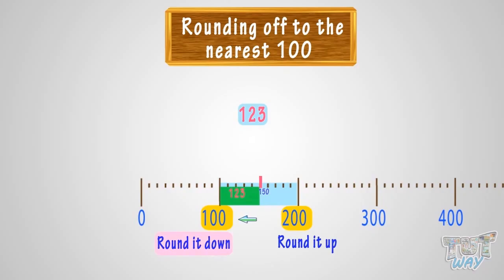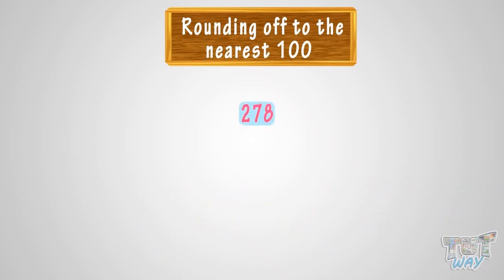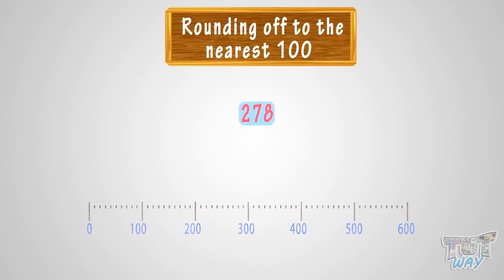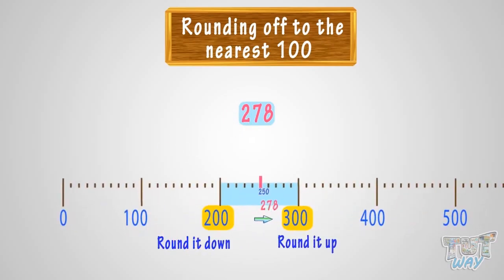Now let's take another example: 278. We have to round 278 to the nearest 100. Let's see where we can fit 278 on this number line — it is somewhere between 200 and 300. 278 is after the 50 mark, so we will round it up to 300.